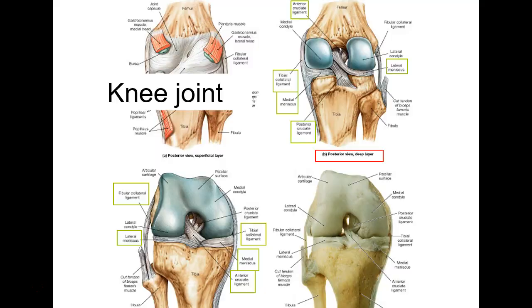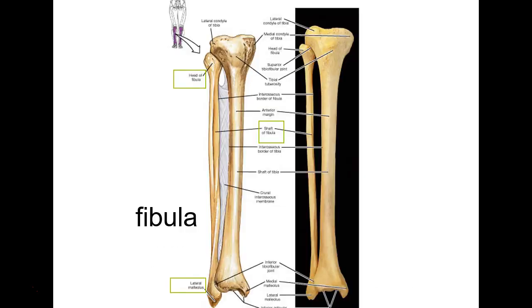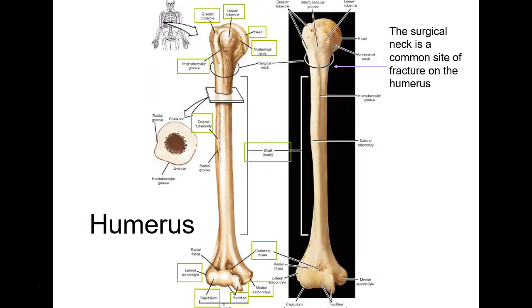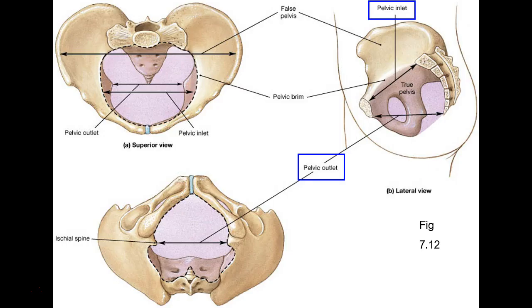The arcuate line is toward the front and forms part of the pelvic rim or brim.